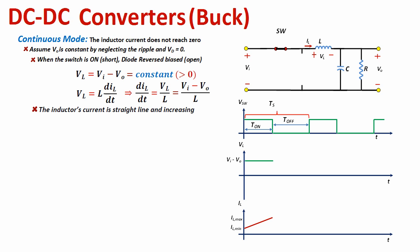To summarize: when the switch closes, the voltage across the inductor becomes positive, which means the inductor current will be a positive and increasing straight line. This is what happens when the switch is on.